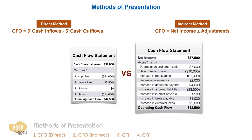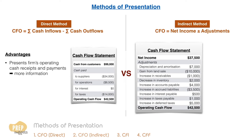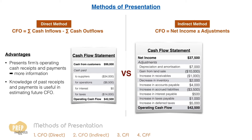The primary advantage of the direct method is that it presents the firm's operating cash receipts and payments, while the indirect method only presents the net result of these receipts and payments. Therefore, the direct method provides more information than the indirect method. This knowledge of past receipts and payments is useful in estimating future CFO.